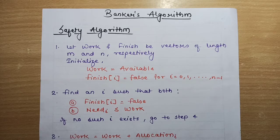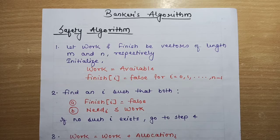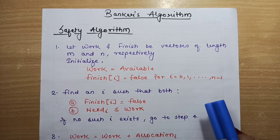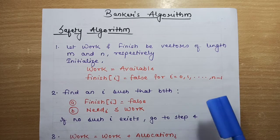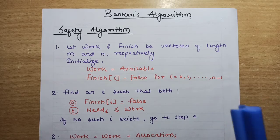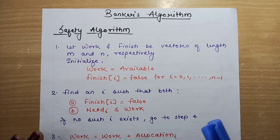In the previous video we were discussing the resource allocation graph. The resource allocation graph algorithm is not applicable to a resource allocation system with multiple instances of each resource type. So if we have multiple instances of each resource type, we cannot use the resource allocation graph algorithm. To avoid deadlock in that case, we need a deadlock avoidance algorithm, and that is the Banker's Algorithm.